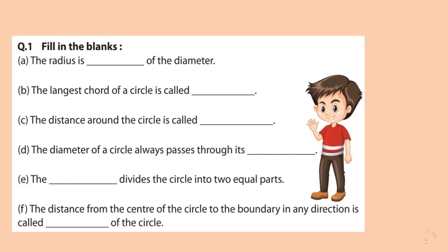Question 1. Fill in the blanks. The radius is dash of the diameter. Radius is half of the diameter. Either you can write 'half' or 1 by 2.